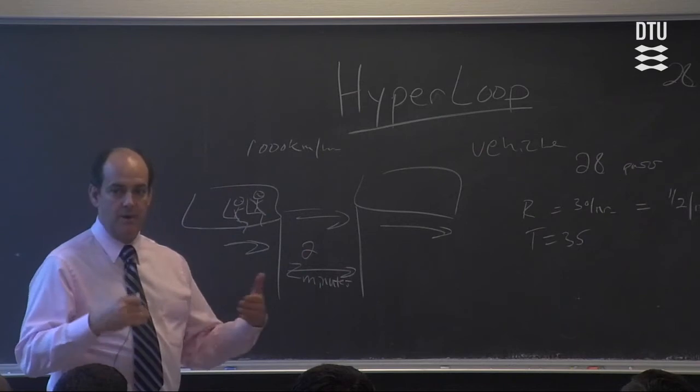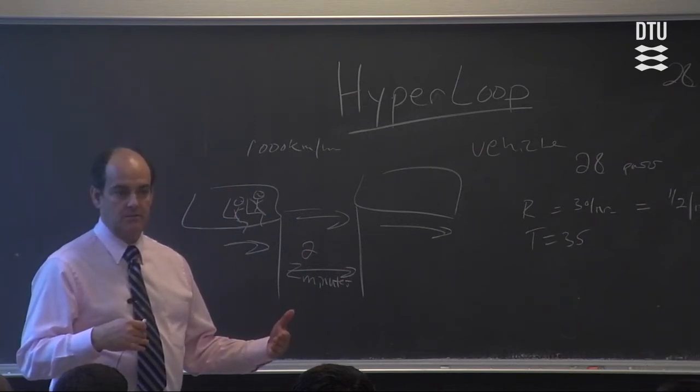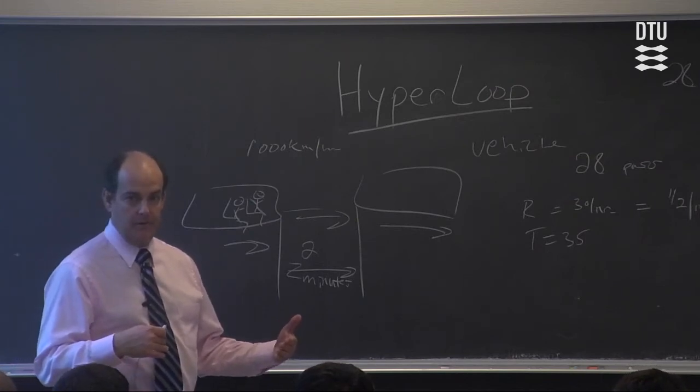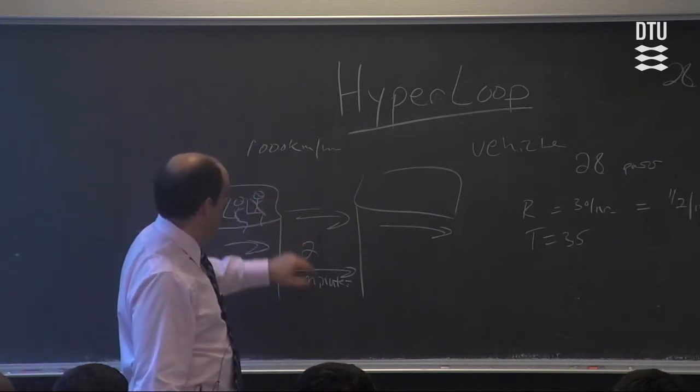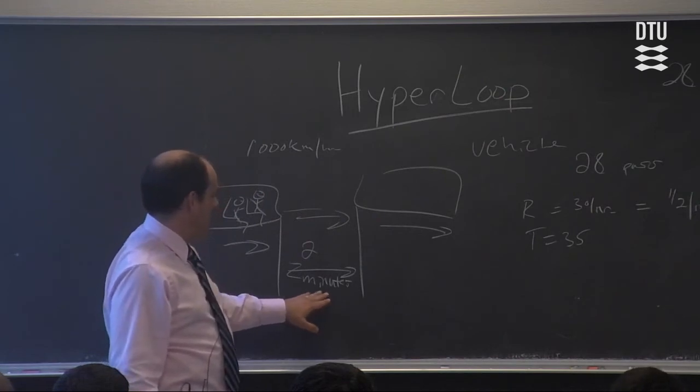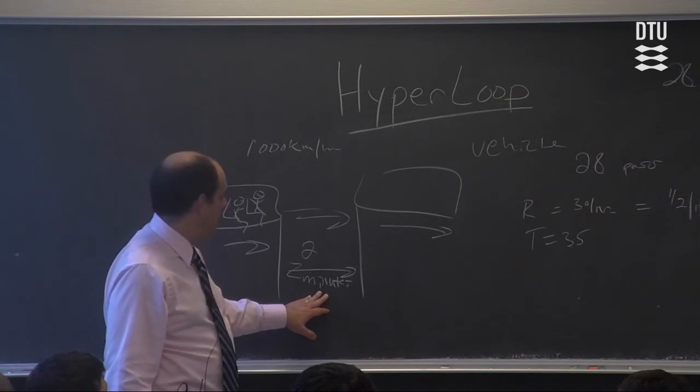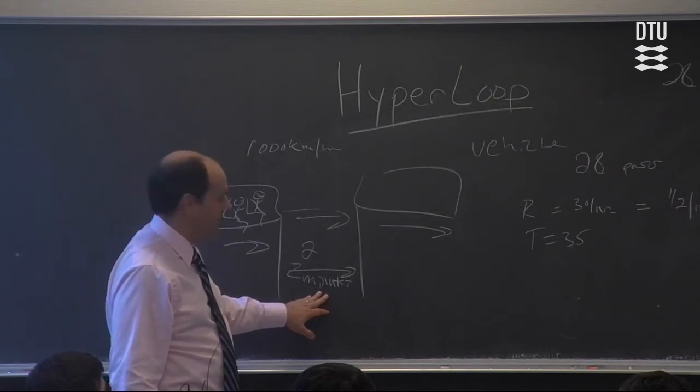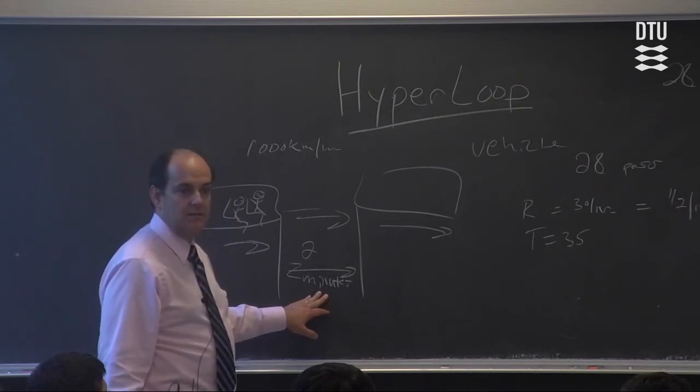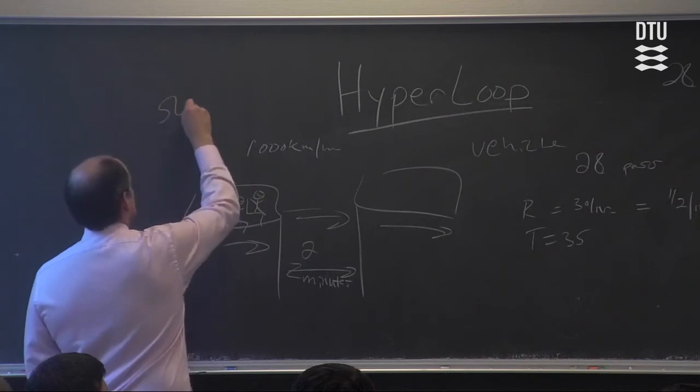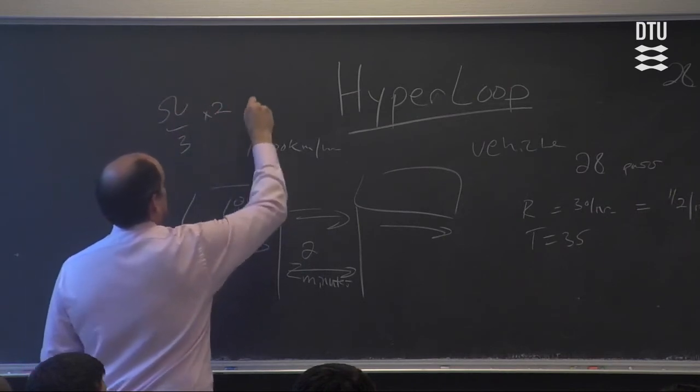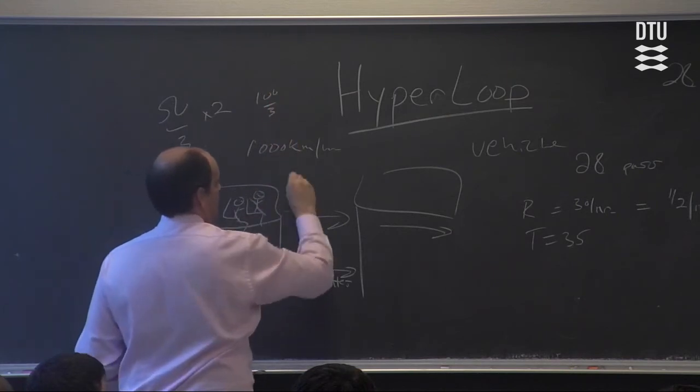Two minutes between departures - what do we call this in railway terms? Headway. This is the headway between the departures. At a thousand kilometers an hour, how far apart are they at two minutes? They're about 30 kilometers apart.